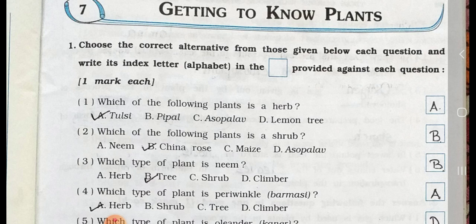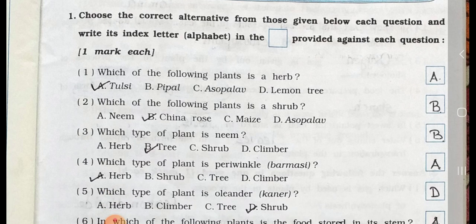Number 1. Which of the following plants is a herb? A. Tulsi, B. Peepal, C. Asopalav, and D. Lemon Tree. Answer is option A. Tulsi.